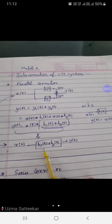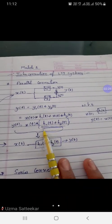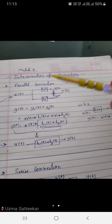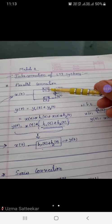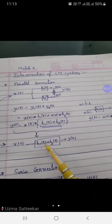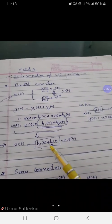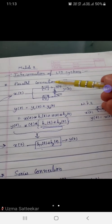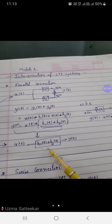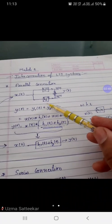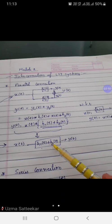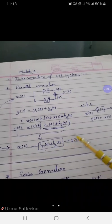So if a system has the parallel connection of two impulse responses, then it is reduced like this: h1 plus h2. For parallel connection, you add the responses. If you have one more, say h3, connected in parallel, then this will be h1 plus h2 plus h3.